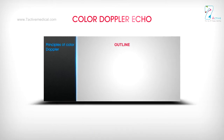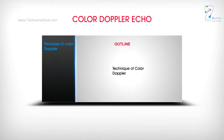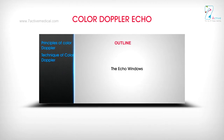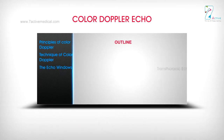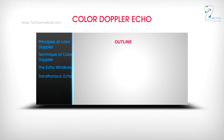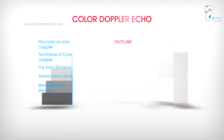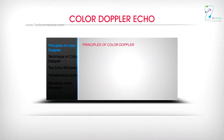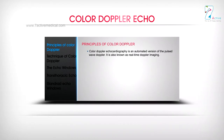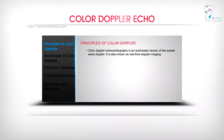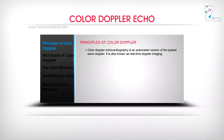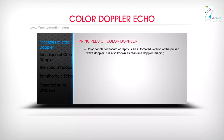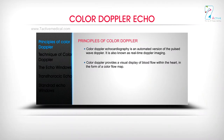Color Doppler echocardiography is an automated version of the pulsed wave Doppler, also known as real-time Doppler imaging. Color Doppler provides a visual display of blood flow within the heart in the form of a color flow map.